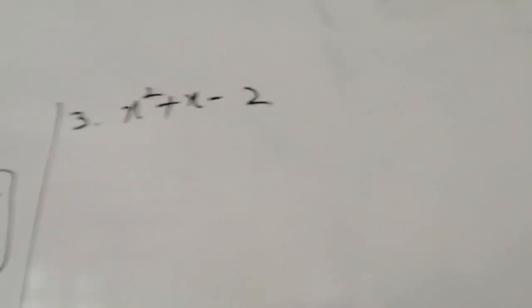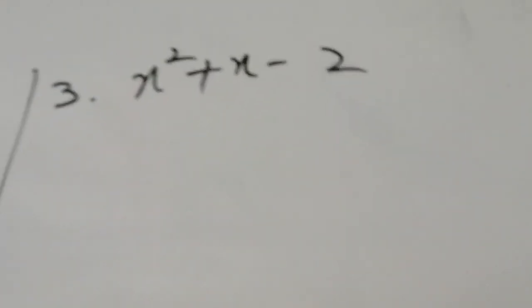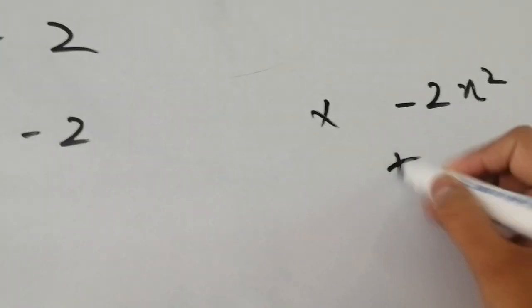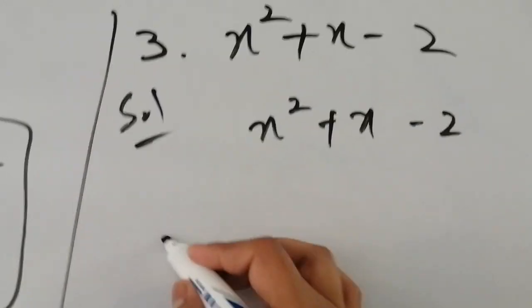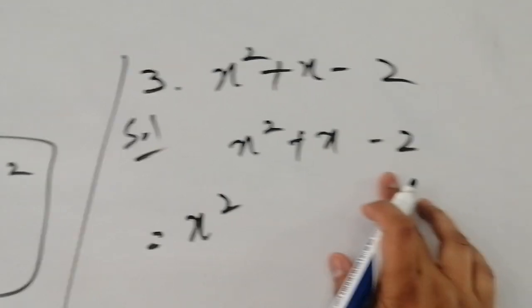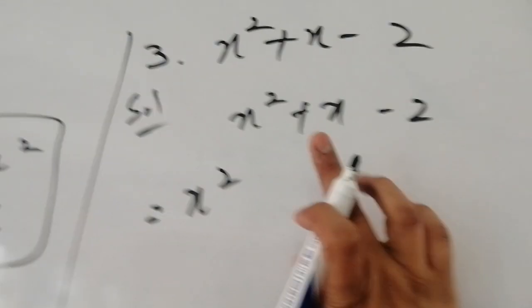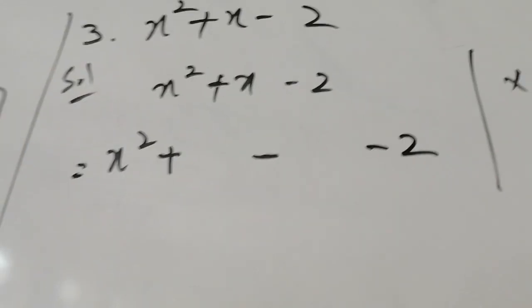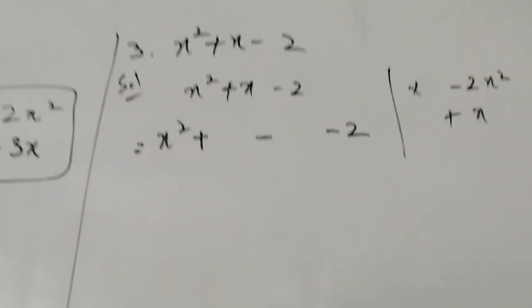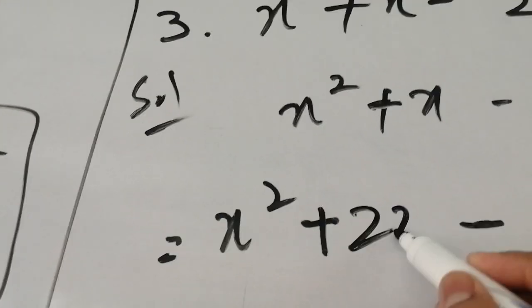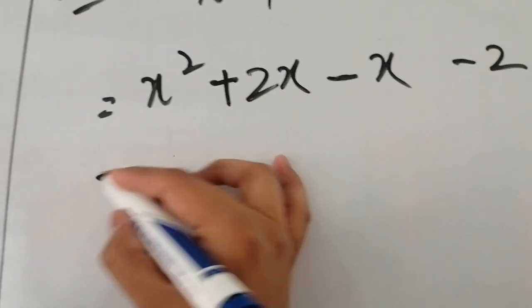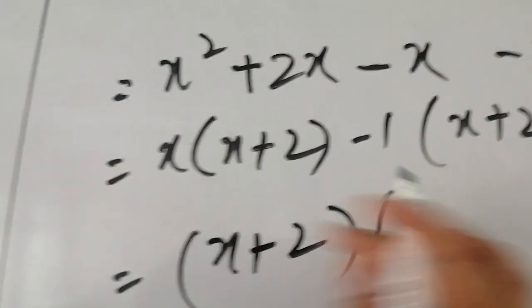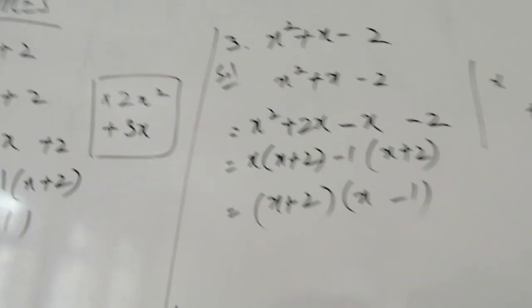Now we go to examples where the last term is minus. When the last number is minus, the two broken terms will have opposite signs. In this example, the middle term is plus, so the larger term will be plus and the smaller will be minus. We break the middle term into −2x and +x. Taking x common from the first pair gives x(x + 2), and taking −1 common from the second pair gives −1(x + 2). The factors are (x + 2)(x − 1).